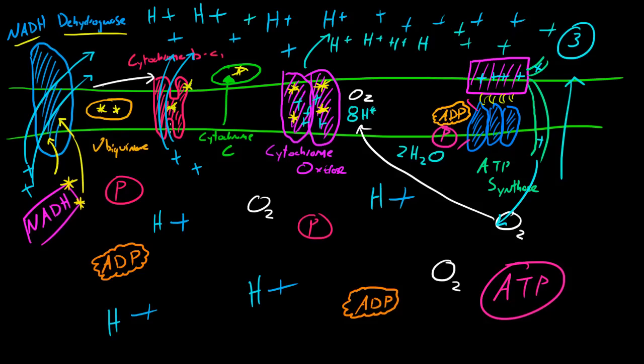Now, once they're in the cytochrome BC1, two more hydrogen ions are going to get shuttled outside the matrix, outside the inner membrane. So now we have electrons in the cytochrome BC1. What happens now is they want to go over to the cytochrome oxidase.